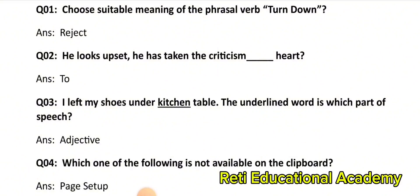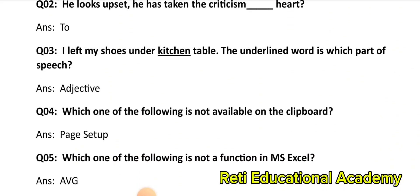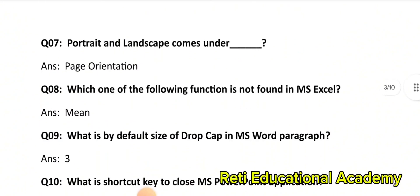Question number 4: Which one of the following is not available on the clipboard? The correct answer is: Page Setup. Question number 5: Which one of the following is not a function in MS Excel? The correct answer is: AVG (Average). Question number 6: Which file among the following starts the MS Word application? The answer is: Winword.exe. Question number 7: Portrait and landscape come under? The correct answer is: Page Orientation. Question number 8: Which one of the following functions is not found in MS Excel? The correct answer is: Mean. Question number 9: What is the default size of drop cap in MS Word paragraph? The correct answer is: 3.